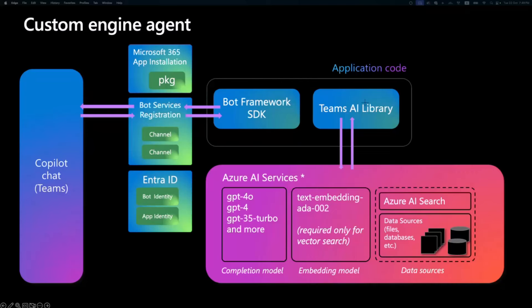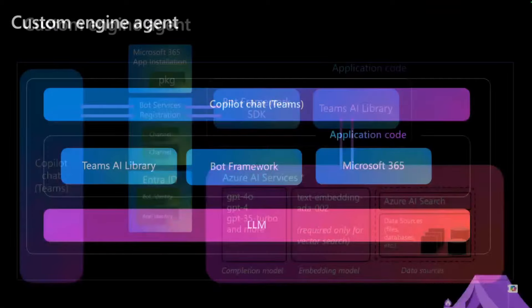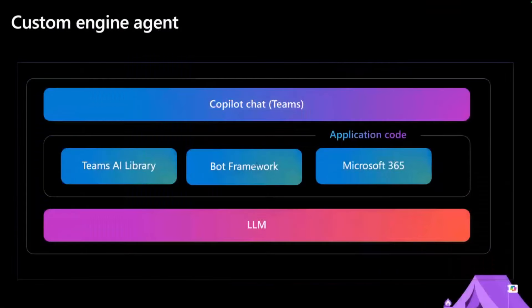If you need to build your own orchestrator, use your own model, and bring any data point you want — any search experience like semantic, vector, or hybrid search — all sorts of capabilities you can add in the custom environment using custom engine agents. The good thing about Teams AI library is that we can bring our existing bots as custom engine agents and use them in Microsoft 365, using custom large language models or small language models behind the scene and your orchestrator of your choice.